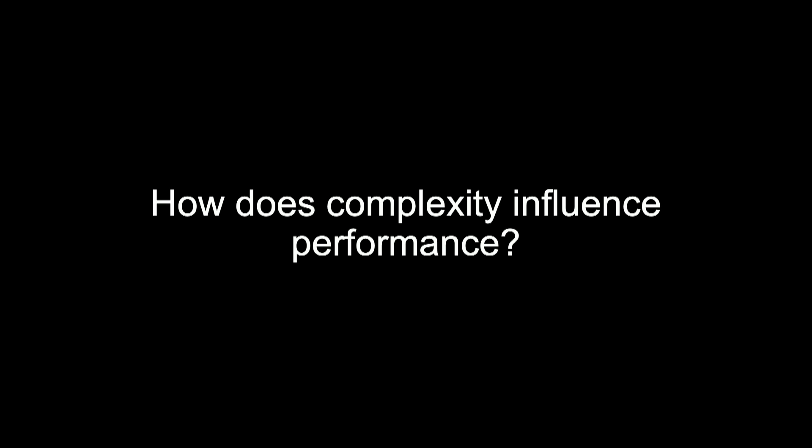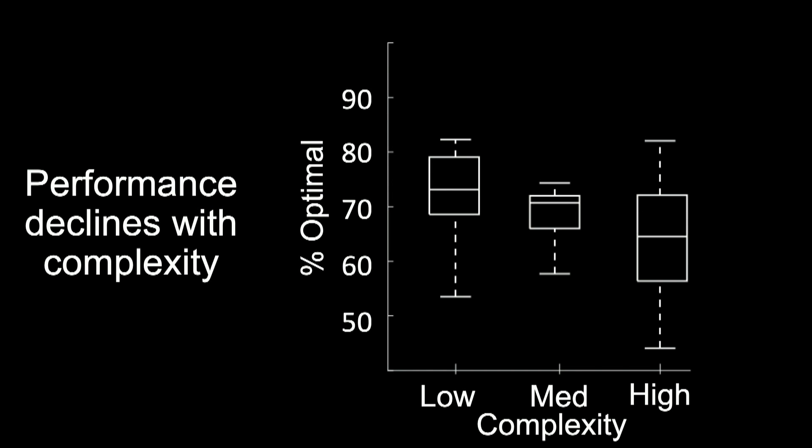The first question we want to answer is: how does the complexity of the task influence the monkey's performance? On the y-axis is his performance — the reward he gets on trials divided by the total he could get, so it's the percent optimal. On the x-axis we've divided trials into three types: low, medium, and high complexity. As we expect, as complexity goes up, performance goes down. Notice that performance is still 65 to 80 percent — much higher than random, so the monkey is genuinely solving these problems.